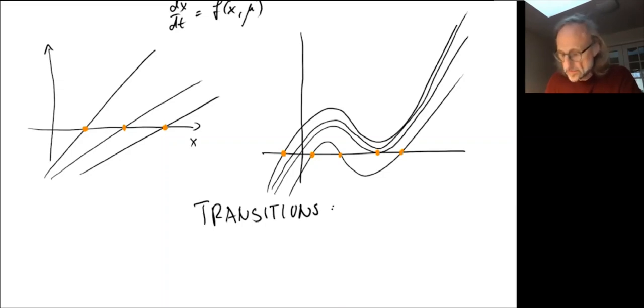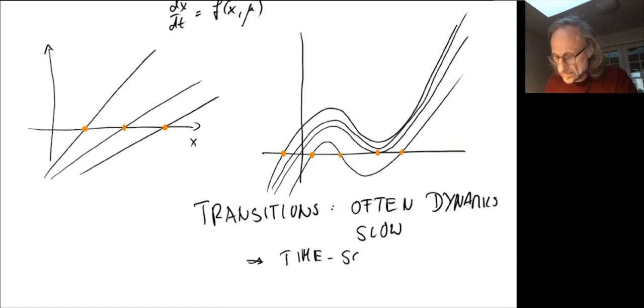It's not always the case, but often the dynamics become slow. And this means that you have multiple timescales, you have a timescale separation. And that allows you to simplify systems substantially.